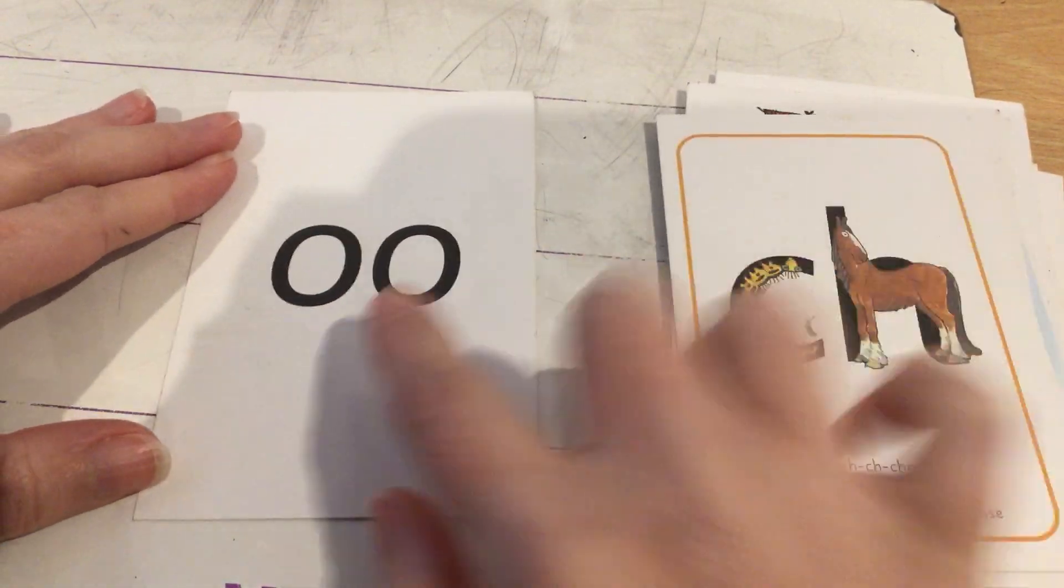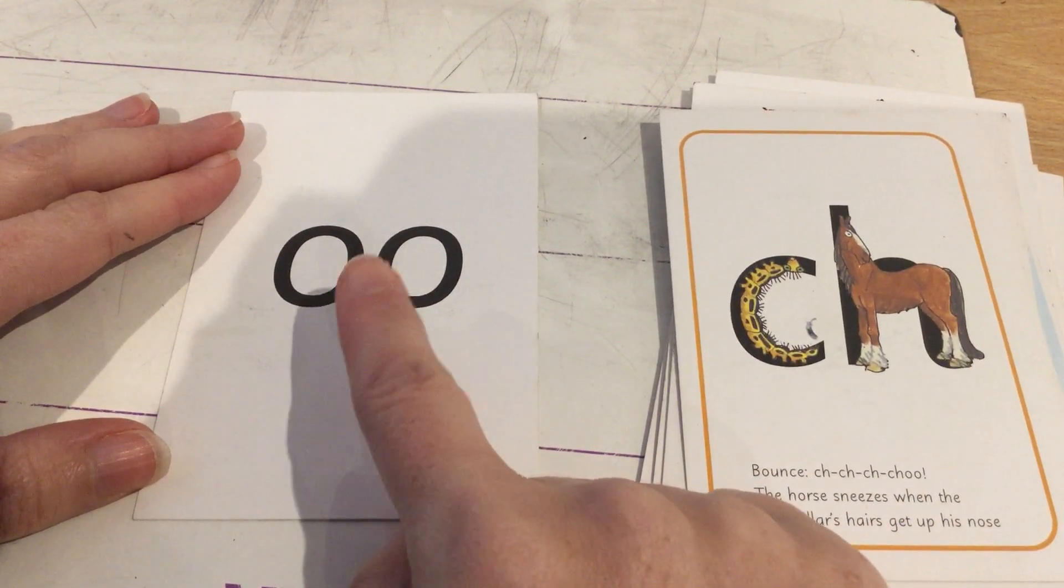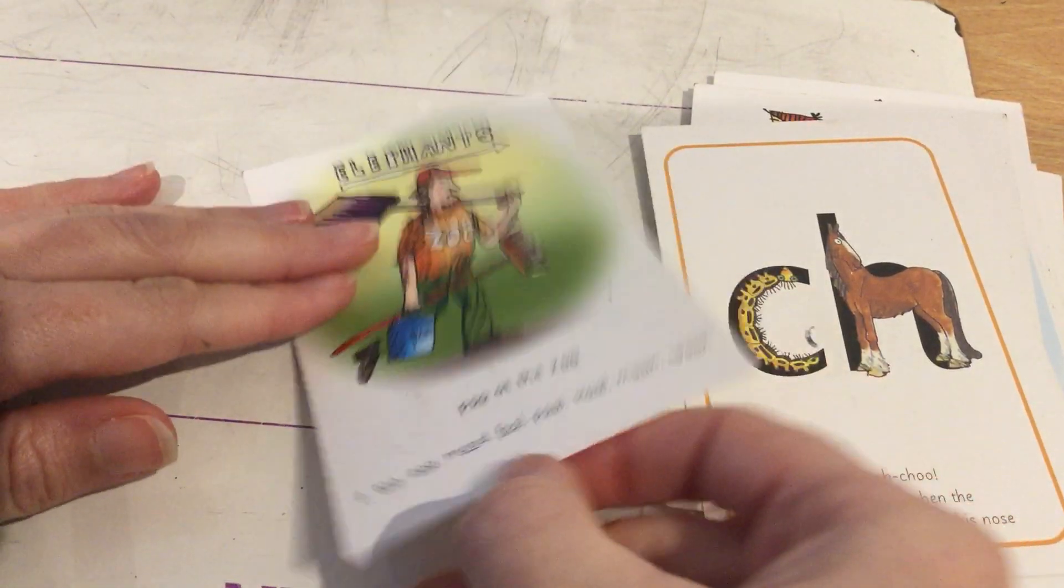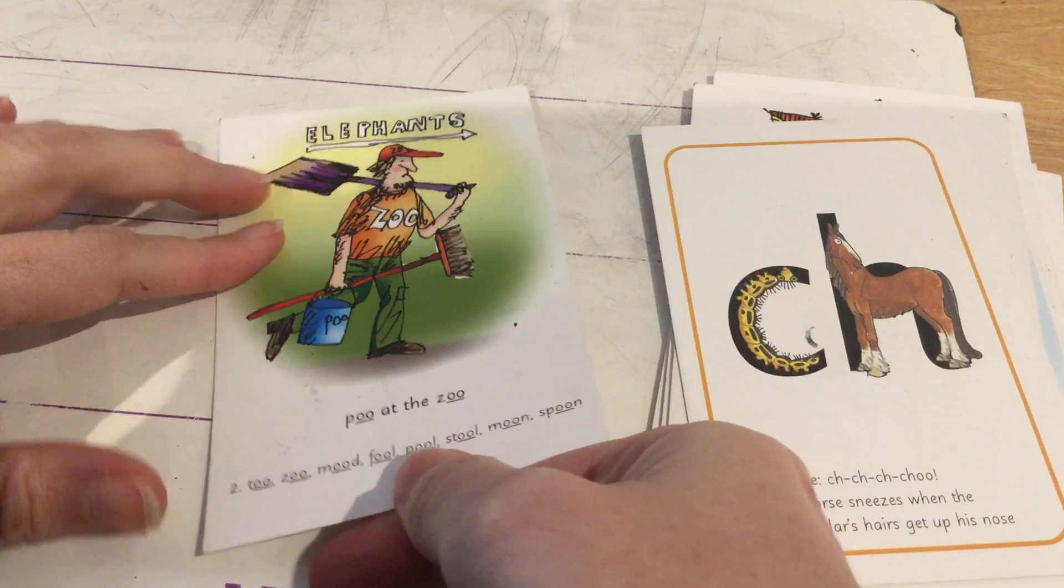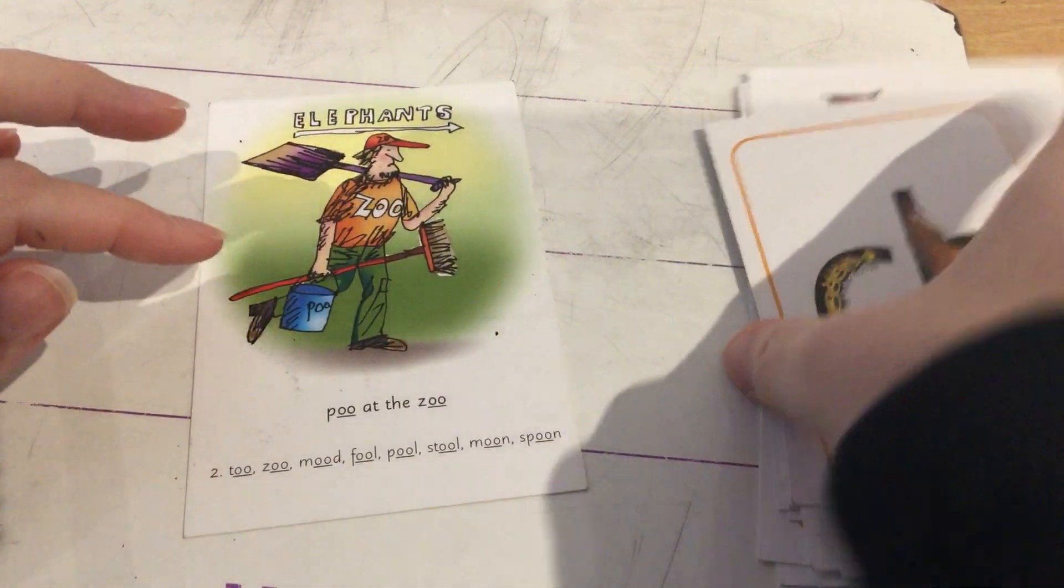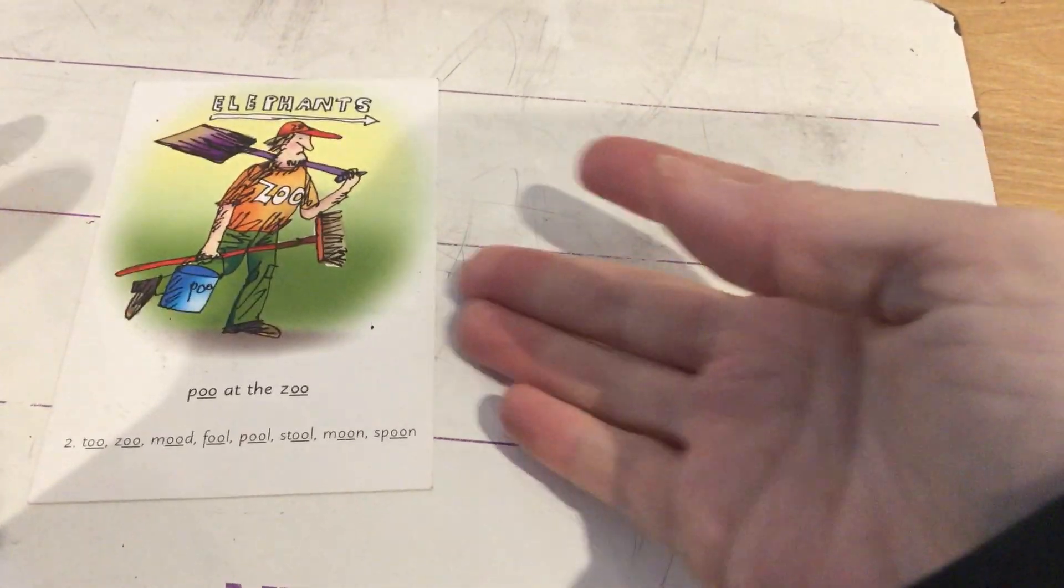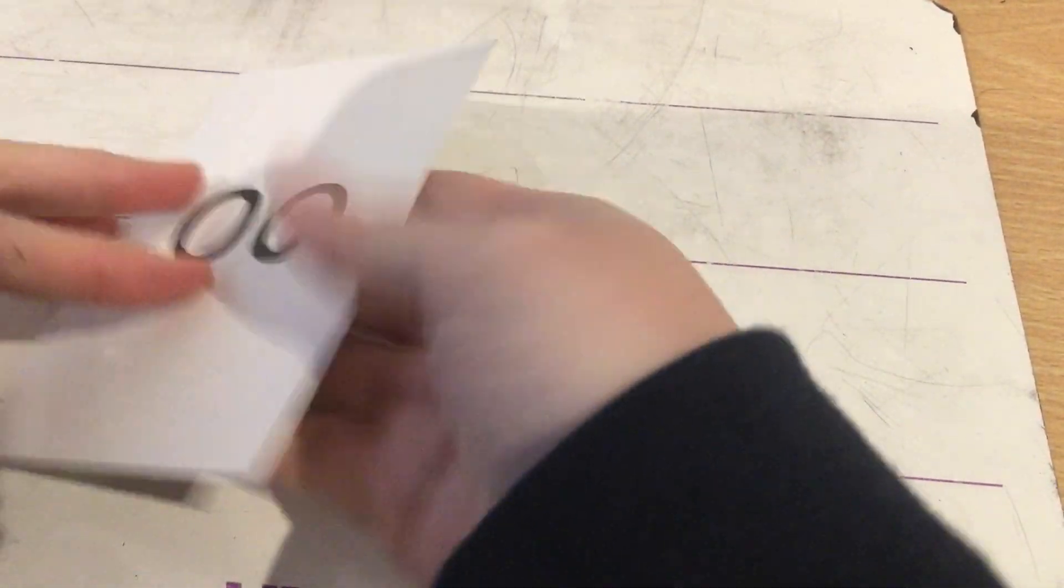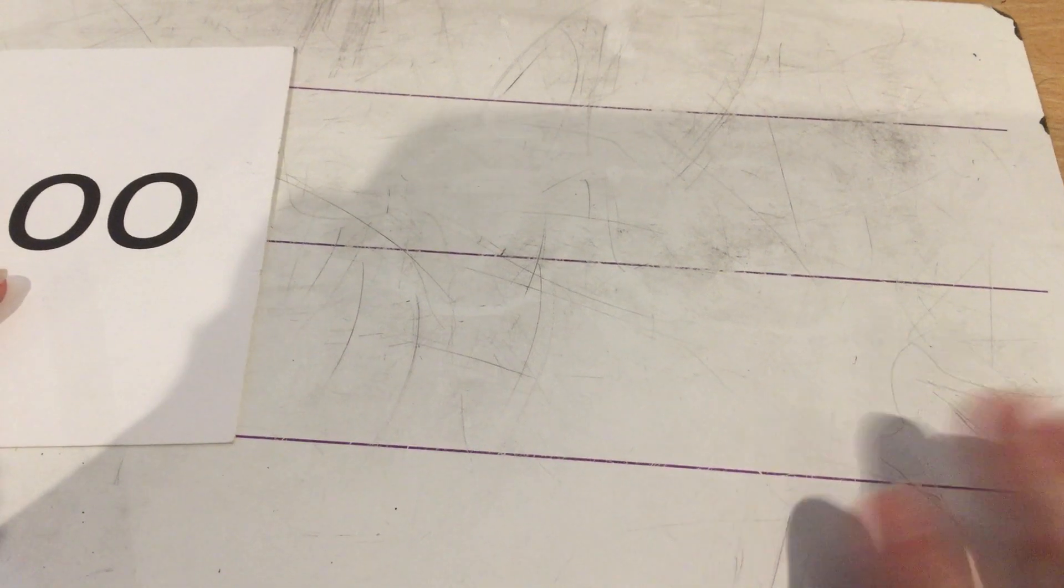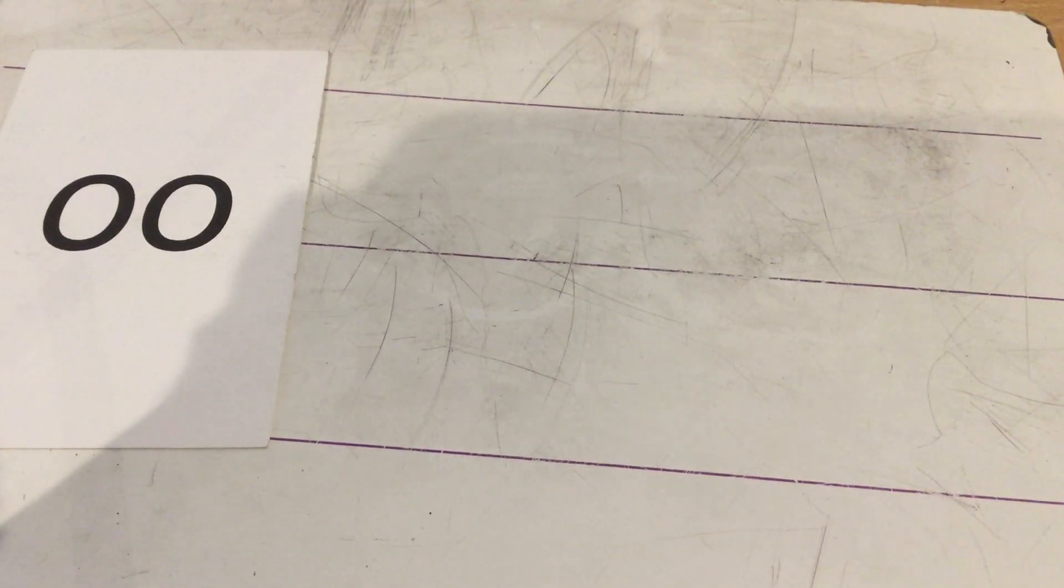And do you remember this one from yesterday? O, poo at the zoo. I'm going to keep that there for the moment because today we're going to be writing some OO words. So let's turn that over and keep it where we can see it because that will help us.